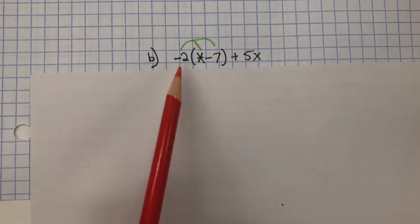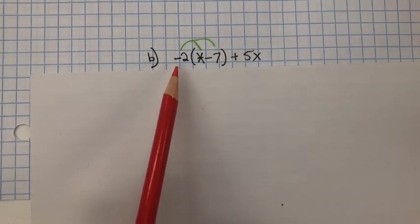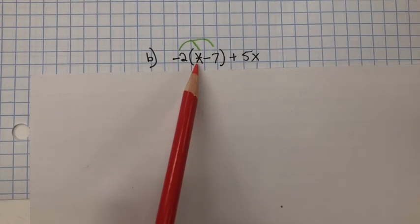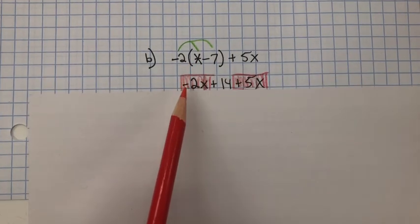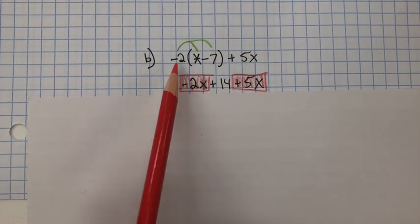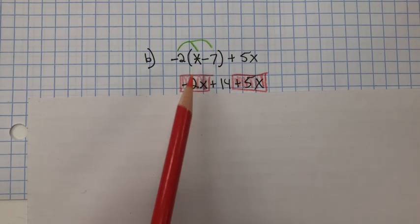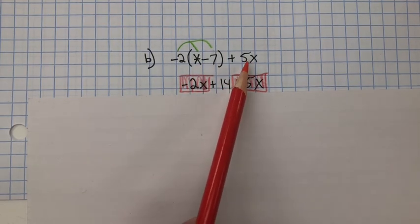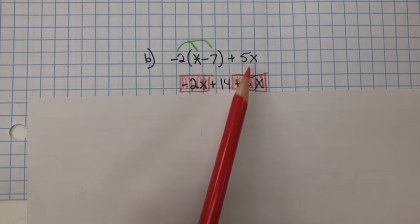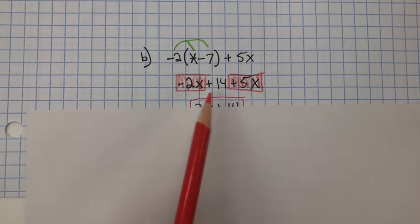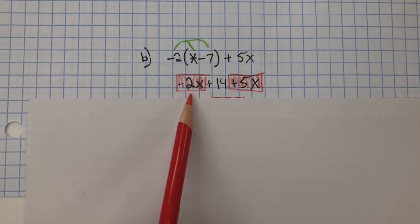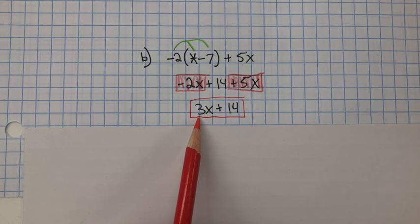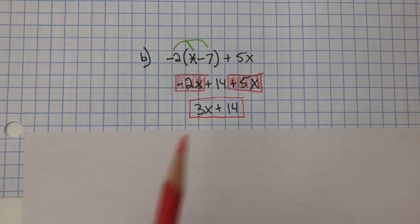In B, we're going to distribute: negative 2 multiplied by x is negative 2x. Negative 2 multiplied by 7 is positive 14. Then we just bring this term down and combine like terms. Negative 2x plus 5x is 3x plus 14.